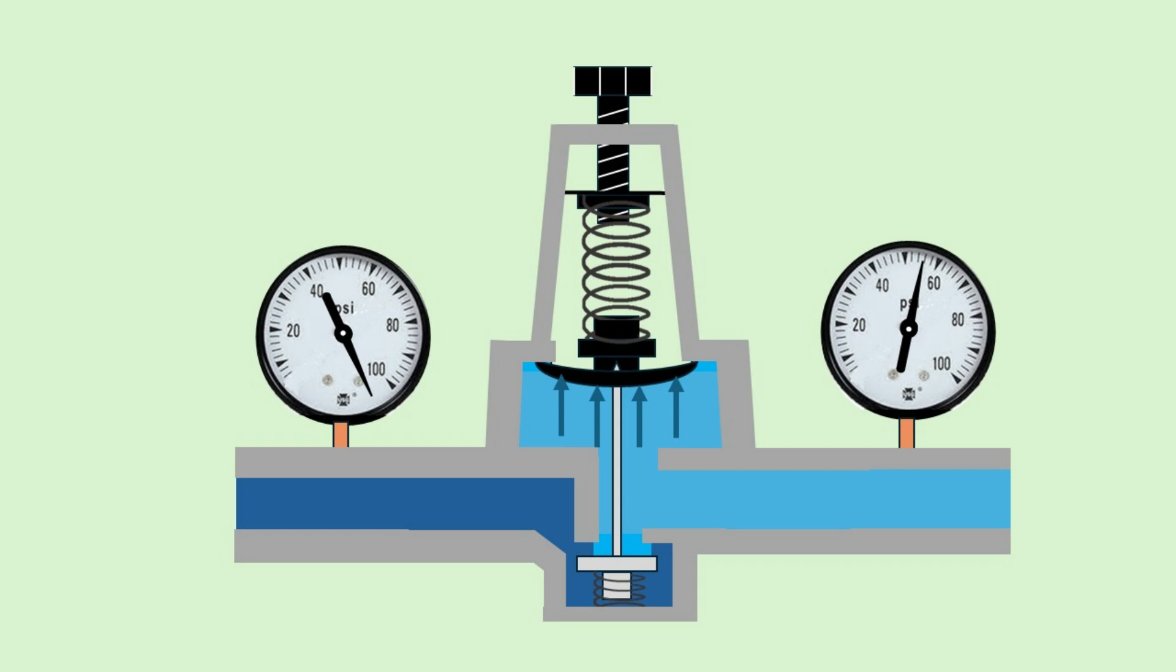As the diaphragm moves upward, it allows the poppet valve to close slightly. This restricts the flow of water, preventing the outlet pressure from rising significantly. As a result, the regulator restores the outlet pressure to its original setting of 50 PSI almost instantaneously.